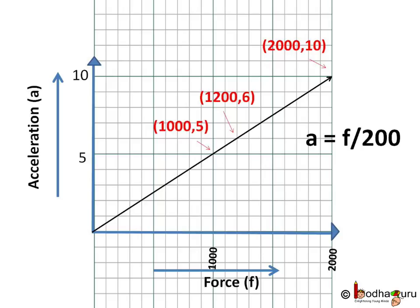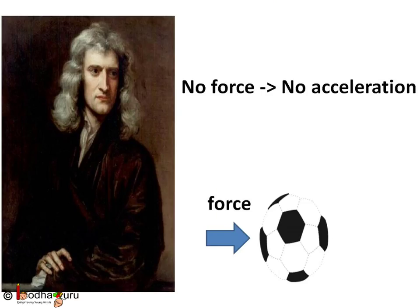Notice this graph passes through the origin — that is, the point (0, 0) — which means when force F is 0, acceleration A is also 0. This reminds us of Newton's first law of motion: an object will not accelerate, or its state of motion will not change, unless an unbalanced force is applied. So no net force means no acceleration.